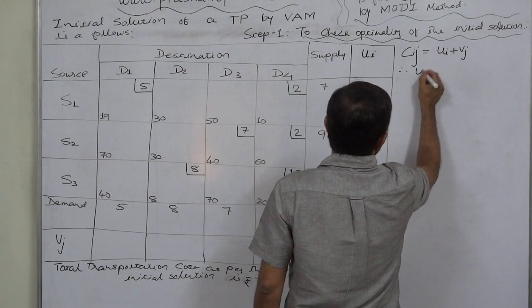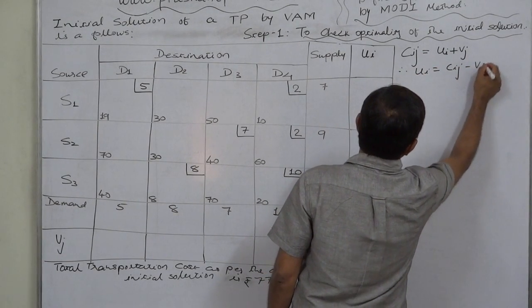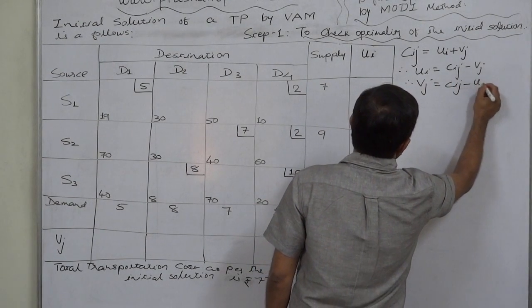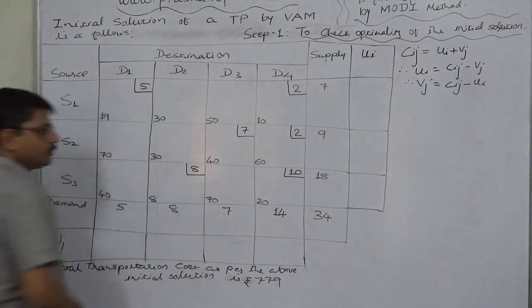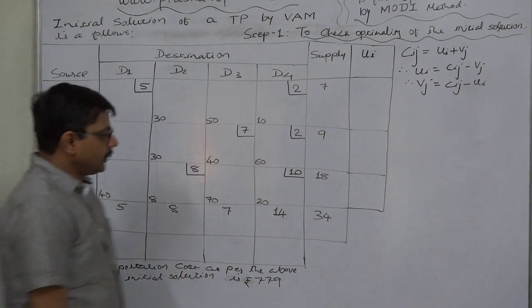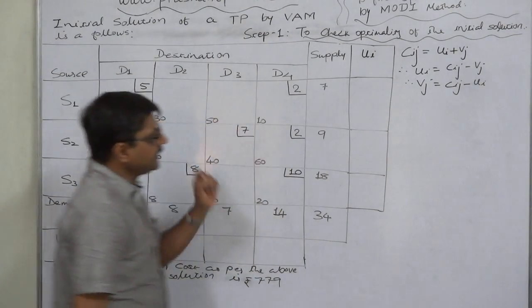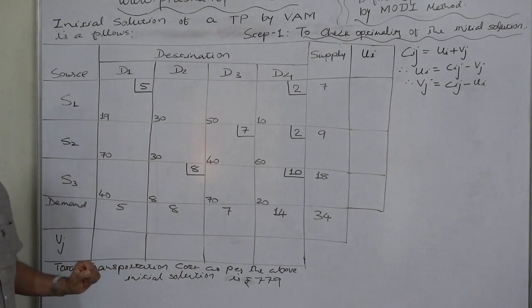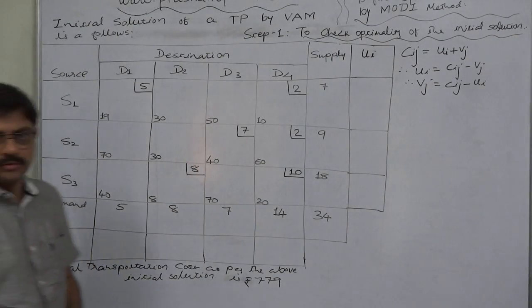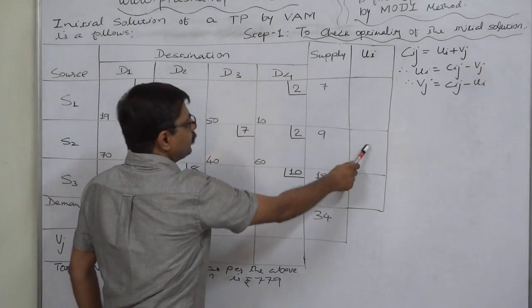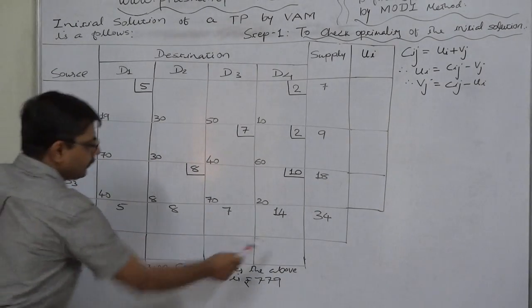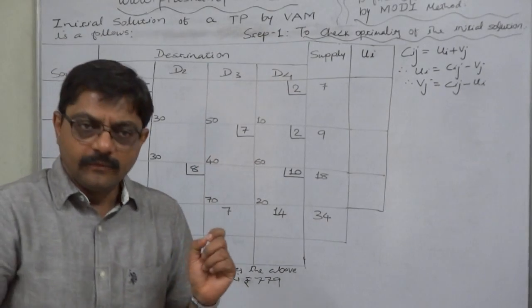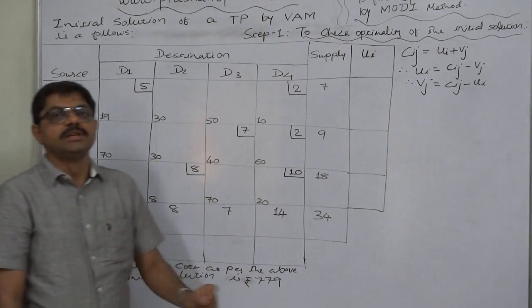Therefore, ui will be Cij minus vj, and vj will be Cij minus ui. To start with, we have to write any one value of either ui or vj arbitrarily as 0. Any one of u1, u2, u3, v1, v2, v3, or v4 — any of these seven — we can write arbitrarily as 0.